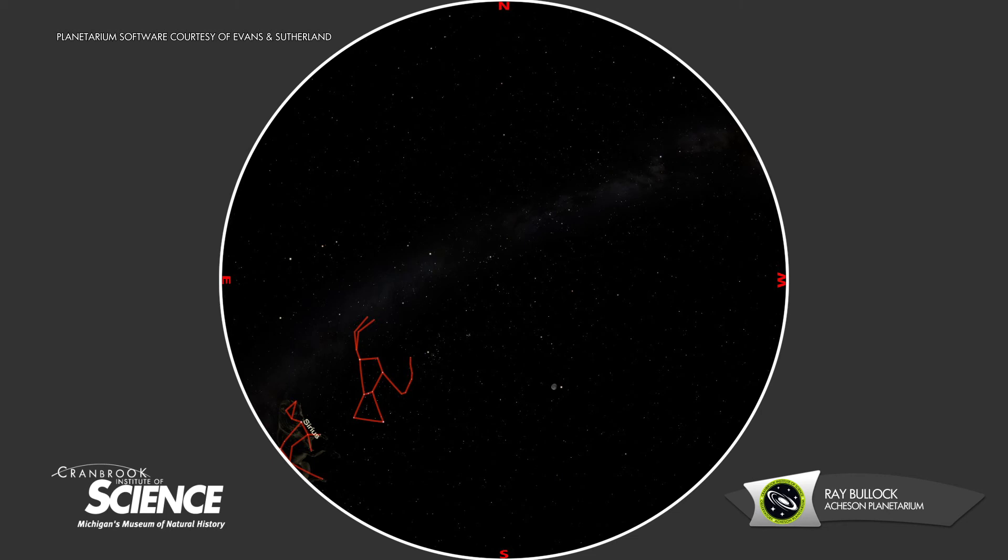If there's a big dog, there must be a little dog. Go back to Orion and draw a line from Bellatrix through Betelgeuse and we'll come to another bright star. This is Procyon in Canis Minor. There are only two stars in Canis Minor. The second fainter star is located directly above Procyon.